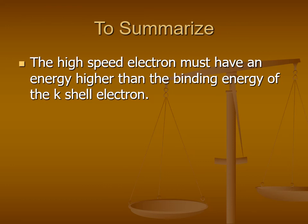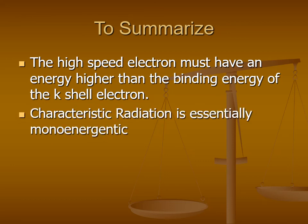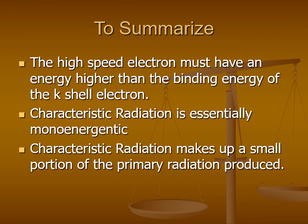Characteristic radiation is mono-energetic or homo-energetic when compared to Bremsstrahlung. Of the X-rays exiting the tube, characteristic radiation makes a small portion of the total beam.